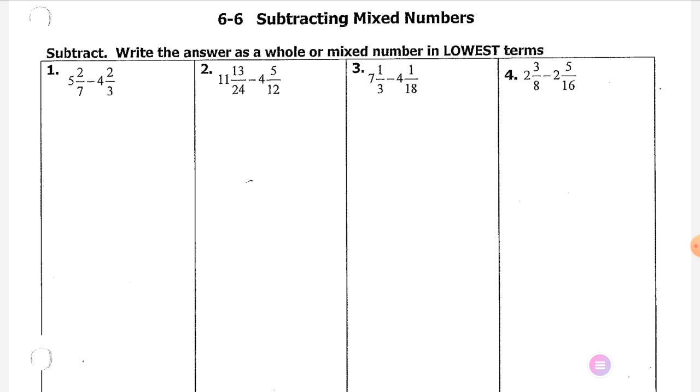How is subtracting mixed numbers different from adding mixed numbers? Brennan? Yeah, it's not any different besides all we do is subtract. Okay? You do it exactly the same. Sometimes we have to regroup, which is just a thing of subtraction. So I'm going to rewrite 5 and 2 sevenths minus 4 and 2 thirds. Meyer, what's a denominator that 7 and 3 can both go into?